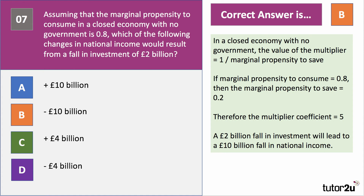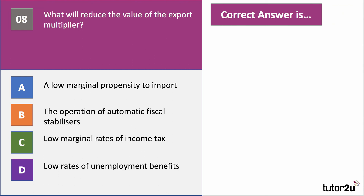Three more questions to go. Question eight: what will reduce the value of the export multiplier? The export multiplier is the effect on national income of a change in exports — it's basically the standard multiplier. The right answer is B — the operation of automatic fiscal stabilisers. A low propensity to import actually increases the value of the multiplier because it's a fall in leakage. Likewise, a low rate of tax reduces leakages and increases the multiplier. When there's a rise in export demand, national income rises but then the government takes more in tax and pays less in benefits, so the automatic stabiliser reduces the value of the multiplier effects of an injection of demand.